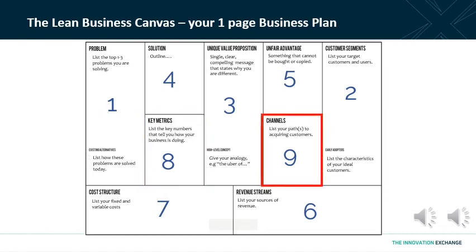Number nine is often overlooked but can be very important to the success of your business and to achieving that unfair advantage: your channel to market. How are you going to reach customers? Is it by knocking on doors, setting up a bricks and mortar retail shop, or putting your goods or services online? If you're bringing a new innovation in how customers receive your goods or services, that can be a difficult innovation for the competition to follow and a very good way of building competitive advantage.